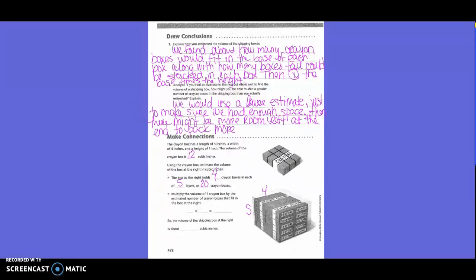Multiply the volume of one crayon box by the estimated number of crayon boxes that fit in the box at the right. So, we said, basically, we know that there's 12 small crayon boxes that fit inside just this one box, right? And we said, how many boxes are in this cube that they would ship? 20. So, 12 times 2 is 24, and then add a 0. So, the volume of the shipping box at the right is about 240 cubic inches.